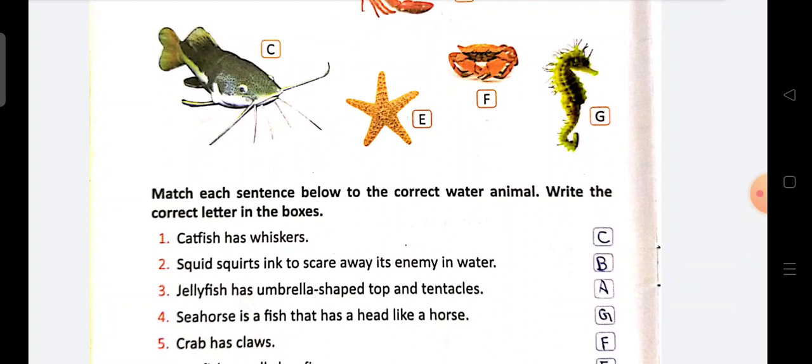Number 4. Seahorse. Seahorse is a fish that has a head like a horse. Iska bita aap ko dhekheye. Yeh kya hai? Ek fish hai.